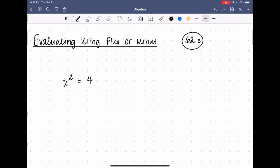We might immediately think, okay, x is 2, right? Because 2 squared equals 4. We know that to be true.